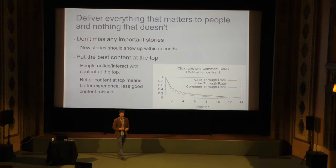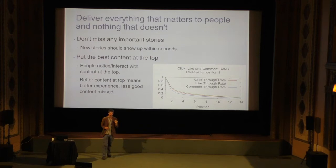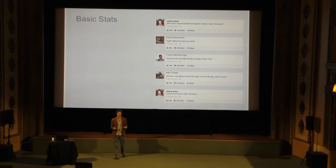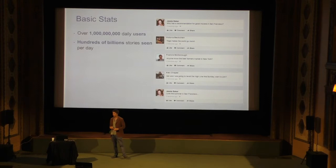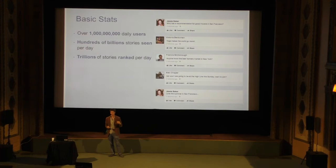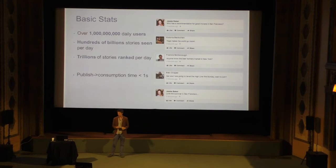You can see this in the metrics we track. This graph shows interaction rates — click, like, and comment rates normalized by position — illustrating how important it is to get the right things at the top. At the scale of this problem: over a billion daily users, hundreds of billions of stories seen each day. To serve and personalize for everyone, we're ranking thousands of stories for each of those billion users, which means many trillions of ranking operations. That informs our algorithms — they obviously have to be fairly efficient.